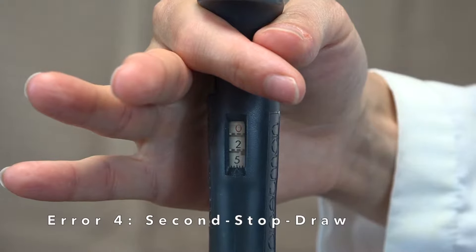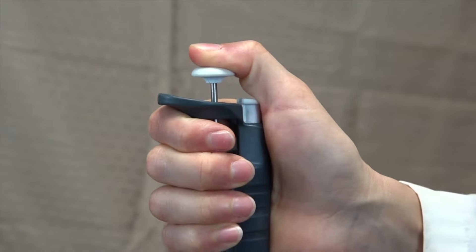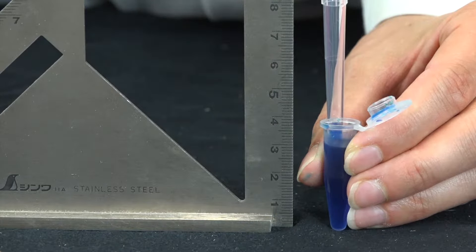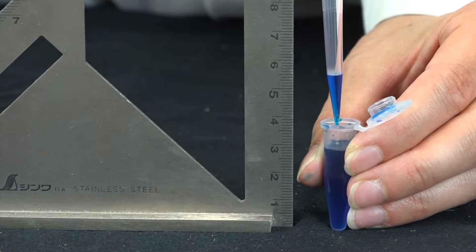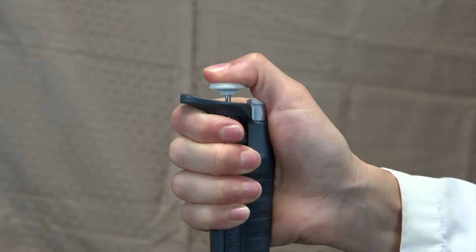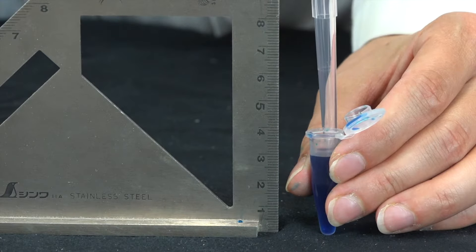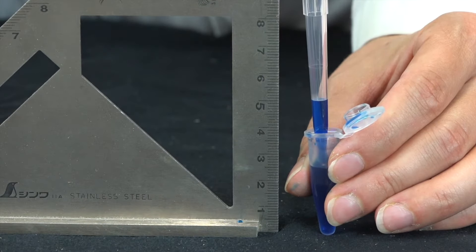I've set this pipette to 250 µL. If you pipette properly by pushing to the first stop, you draw up exactly 250 µL. If instead you push all the way to the second stop before drawing a liquid, you draw up much more than 250 µL, in this case around 316.